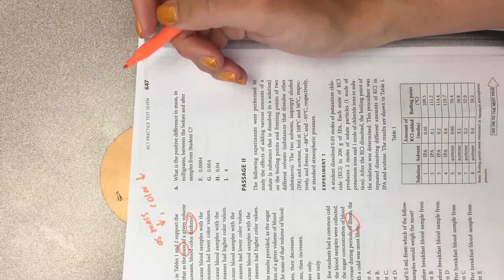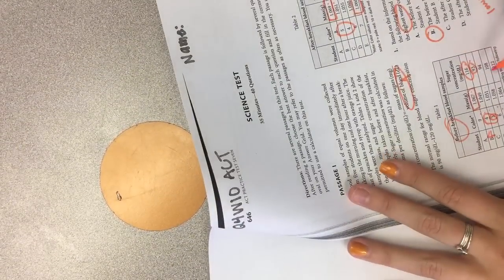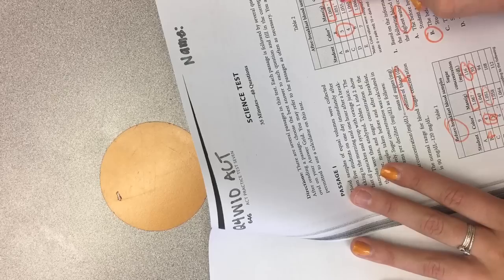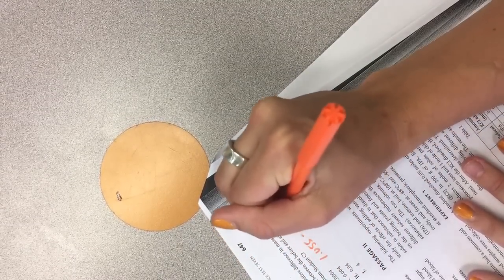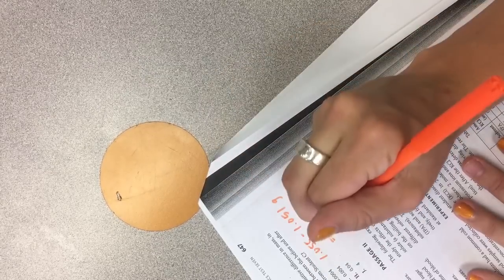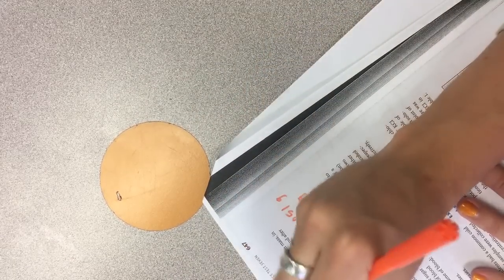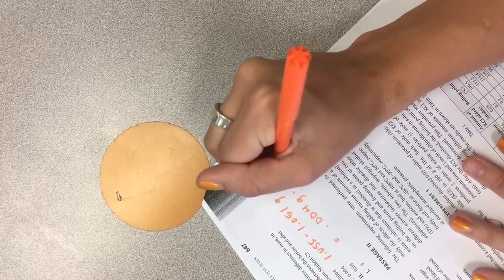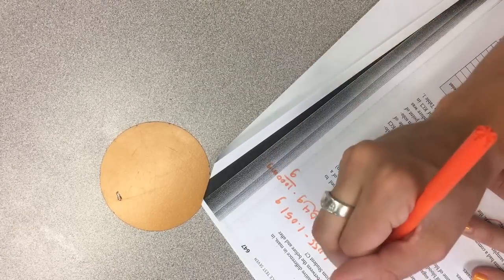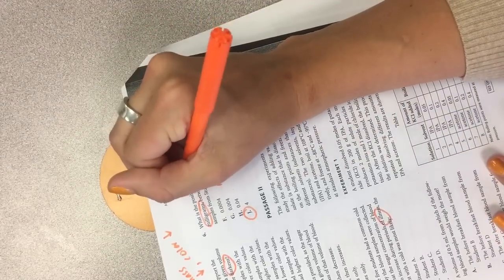And our last one, number six. What is the positive difference in mass in milligrams between the before and after samples from student C. So student C, 1.051, 1.055. So, and these are grams. 1.055 minus 1.051 grams equals 0.004 grams. And then you have to remember it asks for milligrams. So grams, thousand milligrams in each gram. So that's one, two, three. So the answer to six is J. Four. That one you do have to do a little bit of math. So you might have to know your conversions.